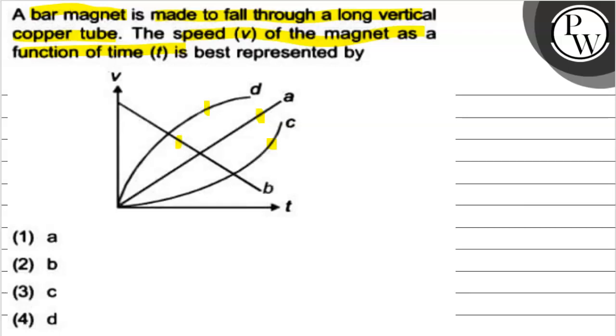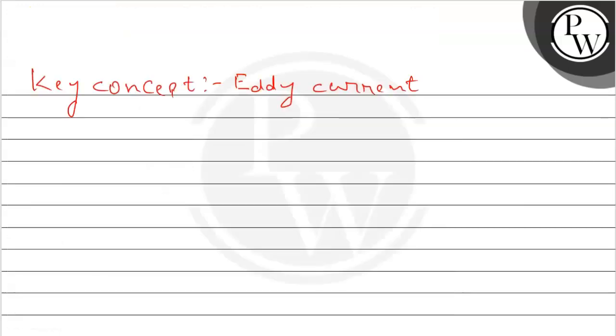As the magnet passes through the copper tube, there will be variation in the flux, and when flux varies, eddy current will be produced throughout the surface of the copper tube. And due to this eddy current, an opposing force will act on the magnet, according to Lenz's law. This means a retarding force will act on the magnet.